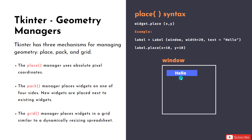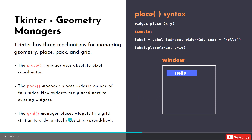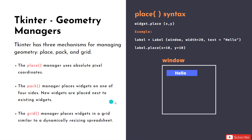There are three simple ways to manage, organize, or align our widgets. The first way is the place manager, the second is the pack manager, and the third is the grid manager. Each one places your widget differently.